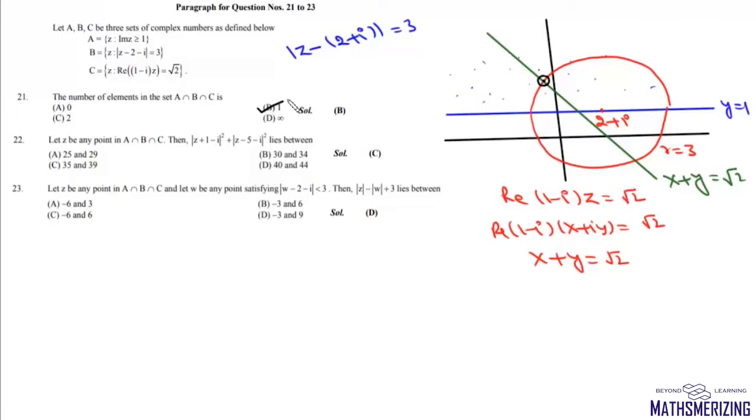So it is this point. Now the next one is let z be any point in A intersection B intersection C. Then mod of z plus 1 minus iota square plus mod of z minus 5 minus iota square lies between. Now any modulus is distance.